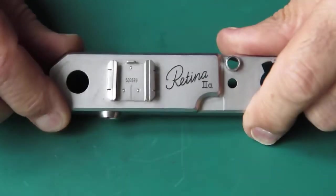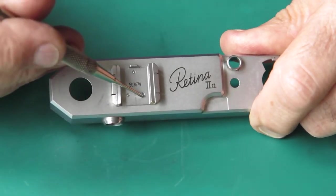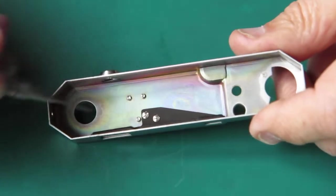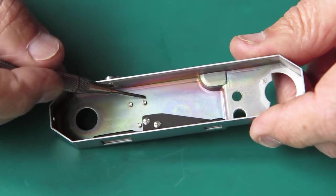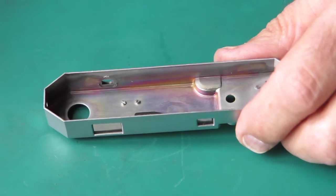Now, this Retina 2A, you'll notice that there are no screw heads visible here. The accessory shoe is actually screwed up with screws from the inside. That was something that was done very briefly.